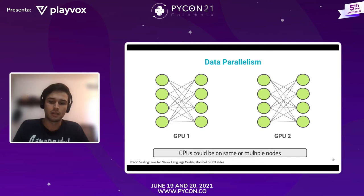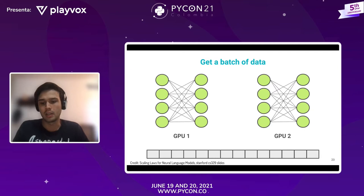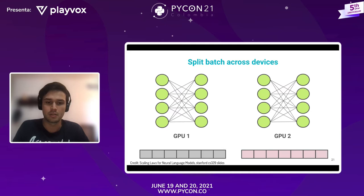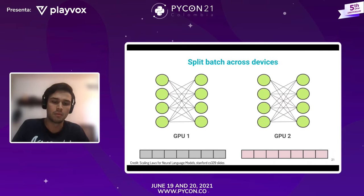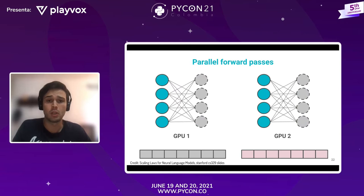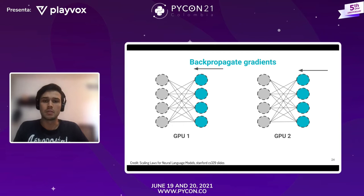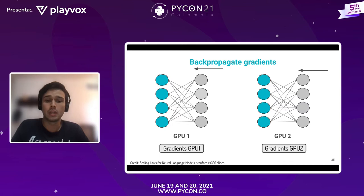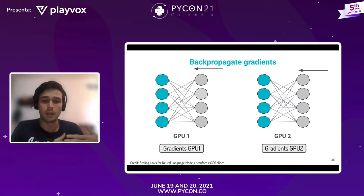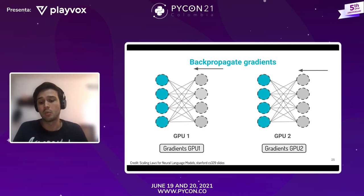Lo que se hace es lo siguiente: primero obtenemos un batch completo con los datos. Estoy mostrando el proceso para dos GPUs, entonces este batch de datos lo partimos en dos: un batch para la primera GPU y otro para la segunda. Con eso alimentamos el modelo y hacemos el forward pass en paralelo en ambos dispositivos. Luego de hacer ese forward pass, hacemos backpropagation para obtener los gradientes en cada GPU.